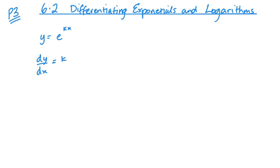It's quite straightforward. If I differentiate e to the kx, it's something we've looked at before: we get k·e^kx. So you multiply by the derivative of the exponent.